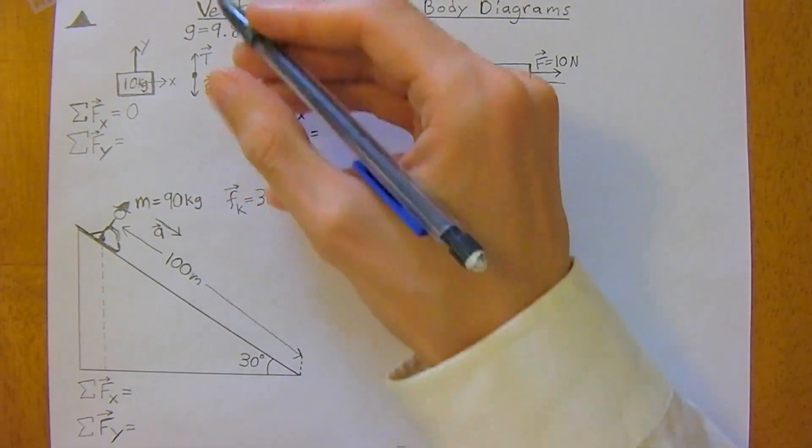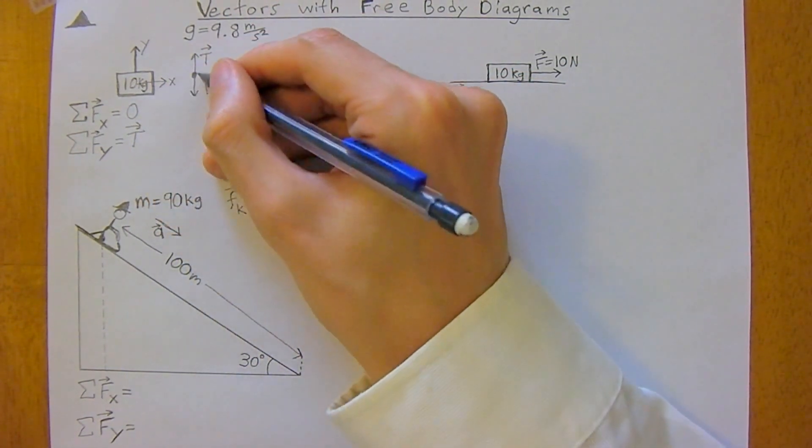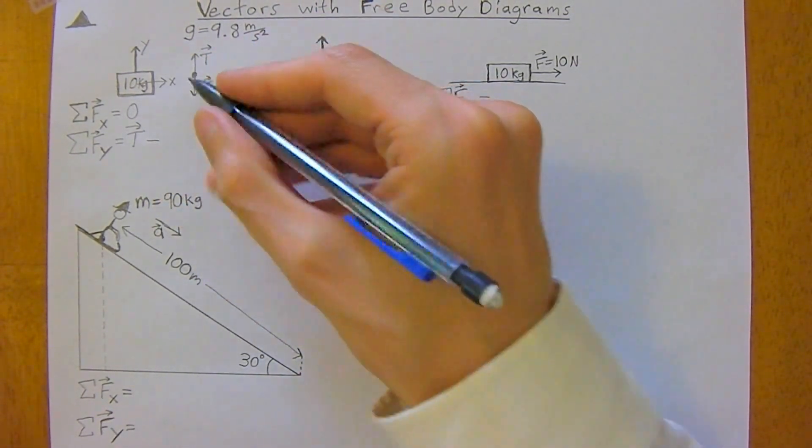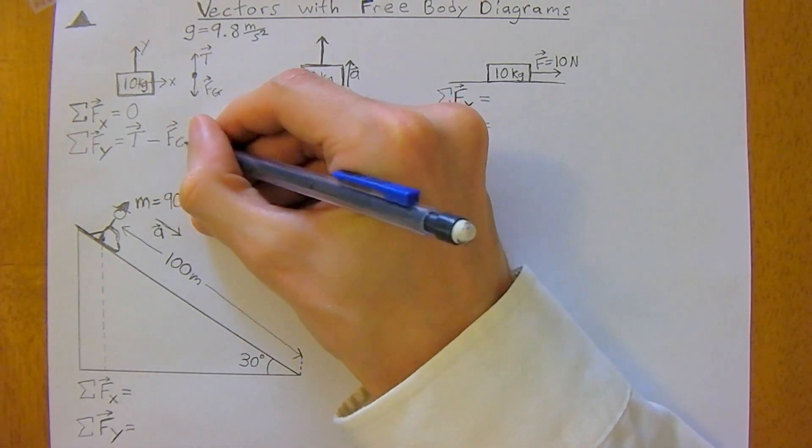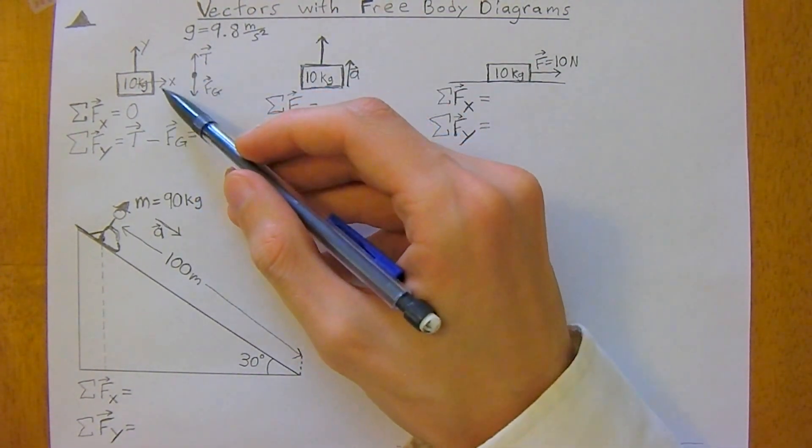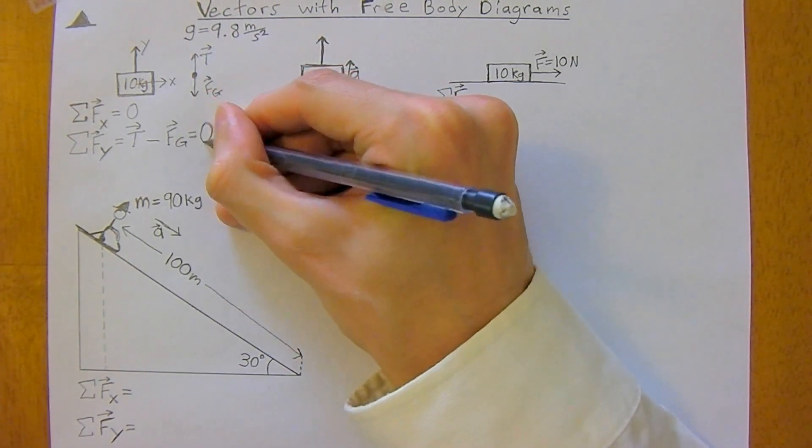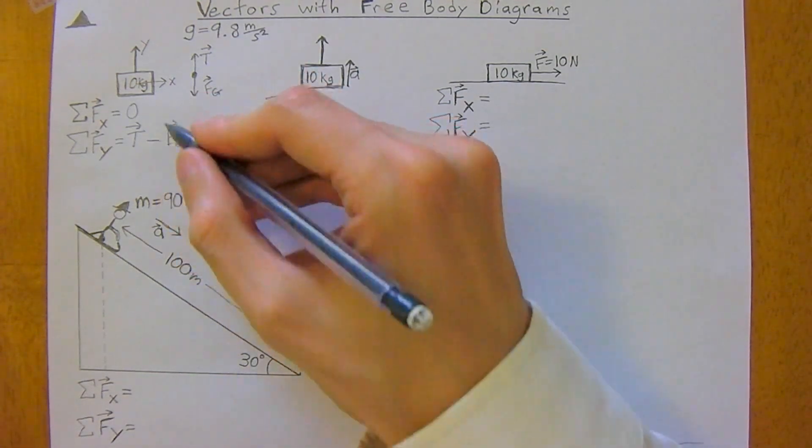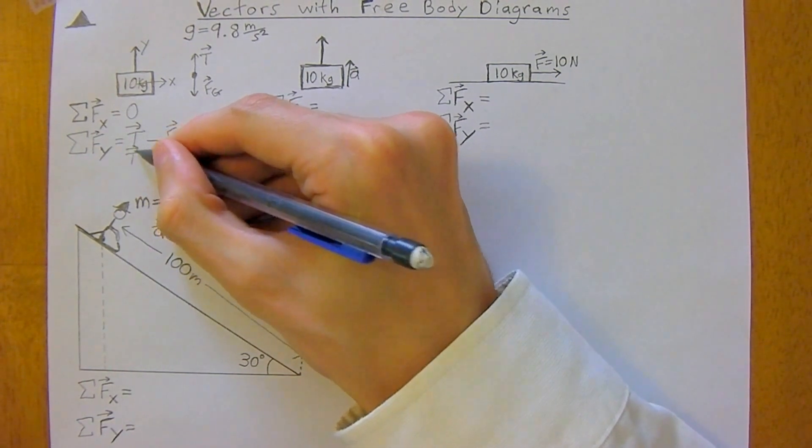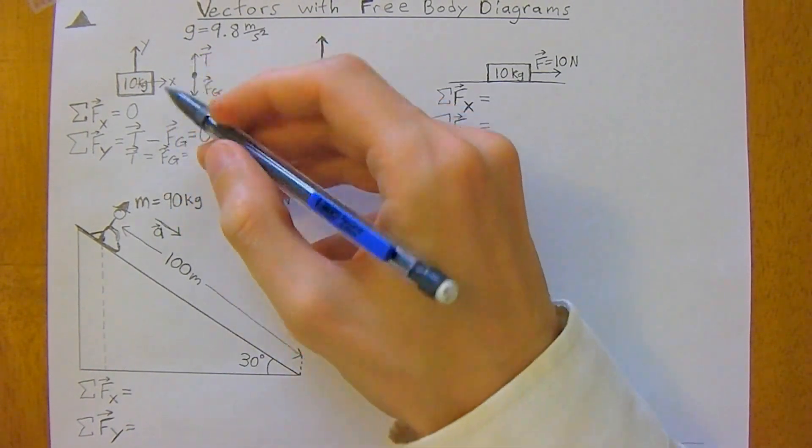And we do have two forces on the y-axis. We have a positive tension pointing up on the y-axis is positive. And we have a negative, pointing down on the y-axis, force of gravity. And in Newton's second law, if it's stationary, so we're at static equilibrium, then there is no ma. It's just equal to zero. So we can add force of gravity to both sides now.